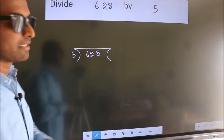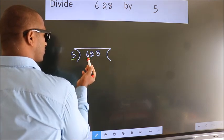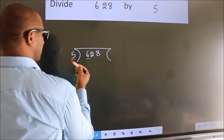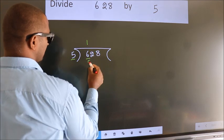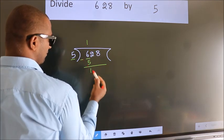Next. Here we have 6, here 5. A number close to 6 in 5 table is 5 once 5. Now, we should subtract. We get 1.